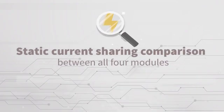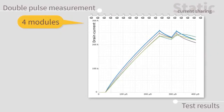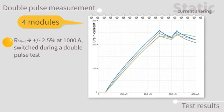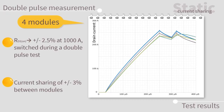The next step is to compare static current sharing between all four modules. With four modules having an RDS on of ±2.5% at 1000 amp total current switched during a double pulse test, the static current sharing was better than ±3%.